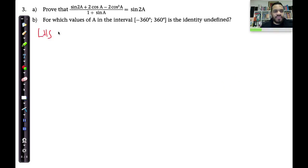So let's see what we can do. We start off with the left-hand side, and we say it's equal to sin2A plus 2cosA minus 2cos³A all over 1 + sinA. Now, I'm not scratching my head because I don't think we can do it. No, that's definitely not the reason.